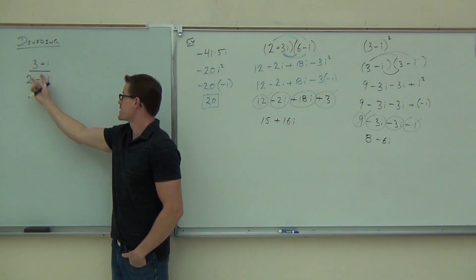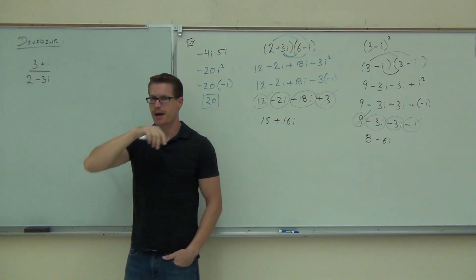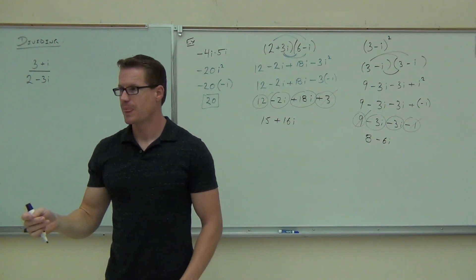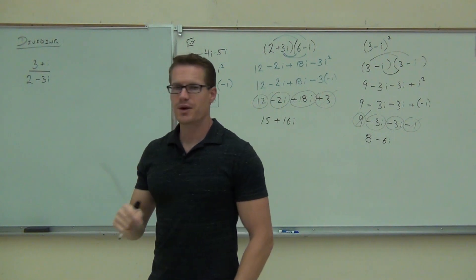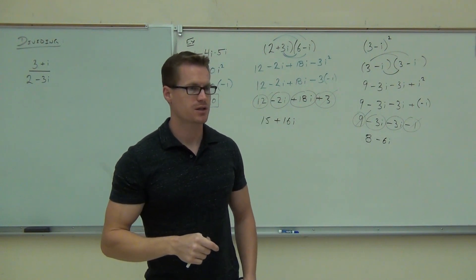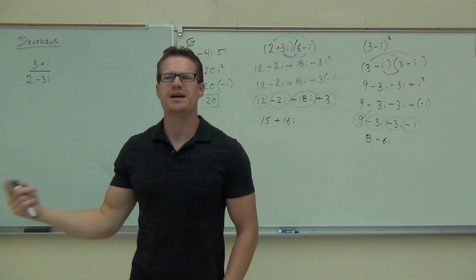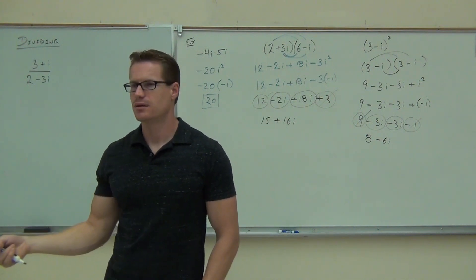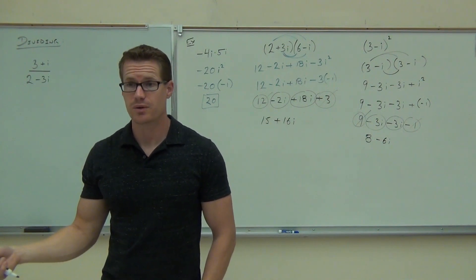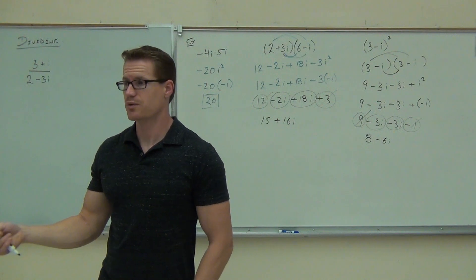First one, of course, is 3 plus i. Second one, 2 minus 3i. Now, I want you to think of something. You've actually already done a problem like this before in this class. How much is i? Square root. It's a square root, right? It's not negative one, it's a square root. So have you already done something where you had a root over a root?